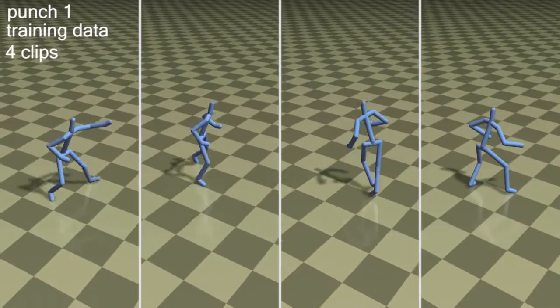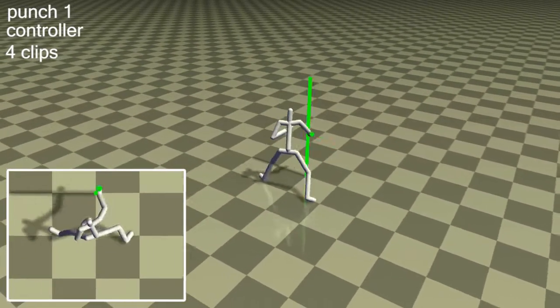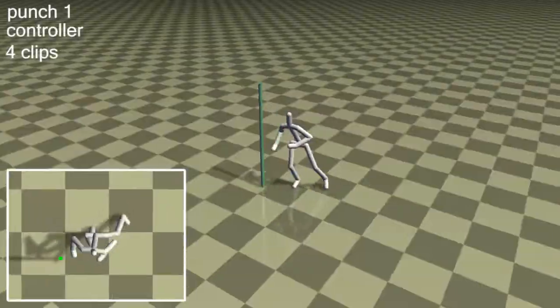Our method can also handle more complex tasks, such as punching. The target lights up when the character receives a reward. When the user moves the target rapidly, our controller can successfully track it.